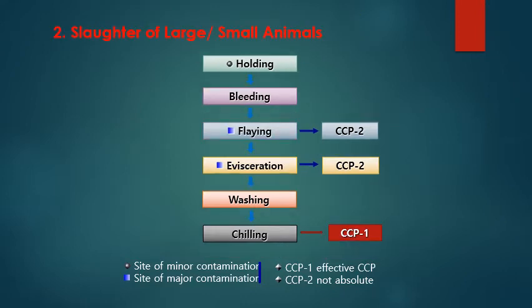For the slaughter of large animals, the major steps are holding in lairage, bleeding, flaying, evisceration, washing, and chilling. Flaying and evisceration are CCP2 — the hazard cannot be fully eliminated, only reduced or delayed. During flaying, there is a high possibility of contamination from the skin itself — bacteria can contaminate the meat, so proper care is needed. During evisceration, there is a high possibility of contamination through mishandling or accidental puncturing. Chilling is CCP1, where the growth of pathogens can be fully controlled through proper temperature and time.